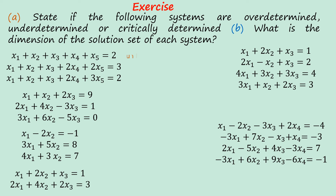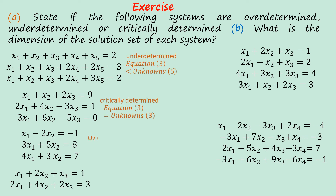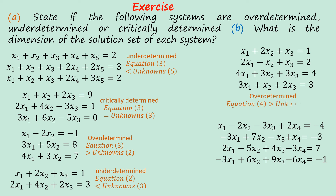The first system is underdetermined. The second is critically determined. The third is overdetermined. The fourth is underdetermined. The fifth is overdetermined. The last is critically determined. The solutions for part B will not be displayed here but will be given in the next video.